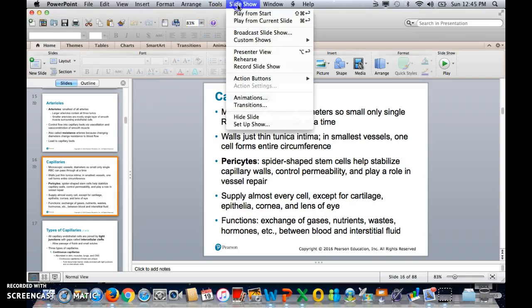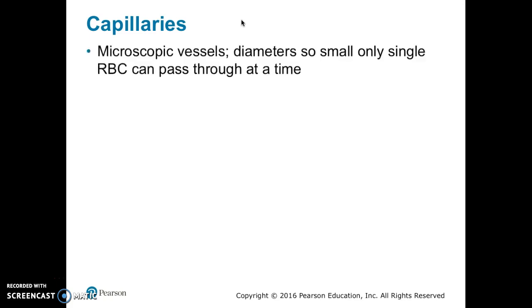Welcome back. We just finished arteries and all the tunics of the different blood vessels, so now we're starting with capillaries. Capillaries are microscopic vessels with diameters so small that only one red blood cell can pass at a time.